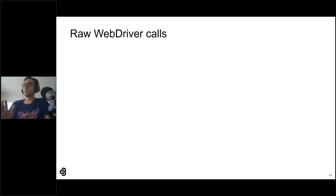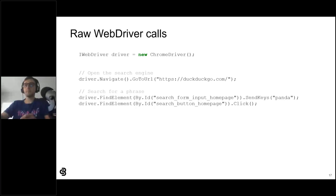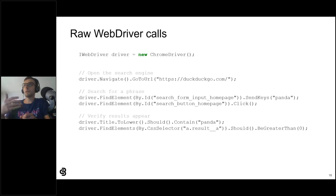Anyone familiar with the WebDriver API should recognize these calls even if they don't use C# themselves. The WebDriver object is initialized using ChromeDriver. The first step opens the search engine by calling driver.Navigate.GoToUrl with the DuckDuckGo web address. The second step performs the search by fetching web elements using driver.FindElements with locators, then calling methods like SendKeys and Click. The third step uses assertions to verify the page title and the existence of result links. At the end of the test, the WebDriver quits the browser for cleanup.